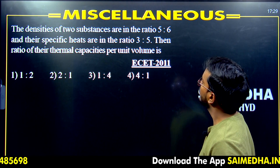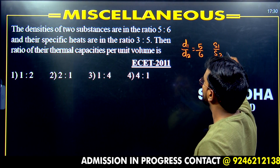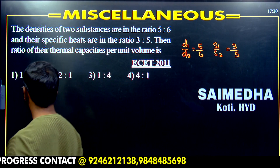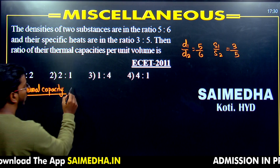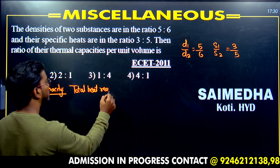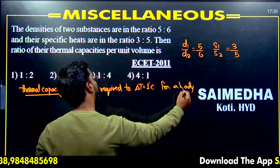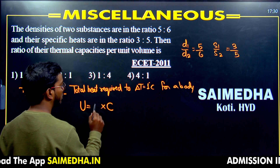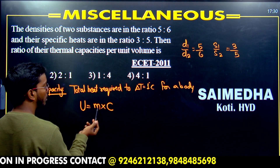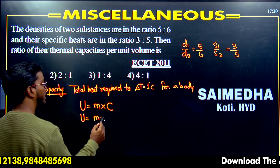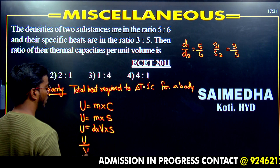The next question: the densities and specific heats of two substances are in the ratio d1/d2 = 5/6 and s1/s2 = 3/5. Find the ratio of thermal capacity per unit volume. Thermal capacity is the total heat required to change the temperature by 1 degree Celsius for a body. Specific heat is for 1 kg; thermal capacity equals specific heat into total mass. Since mass equals density into volume, thermal capacity per unit volume equals density times specific heat: U/V = d × s.